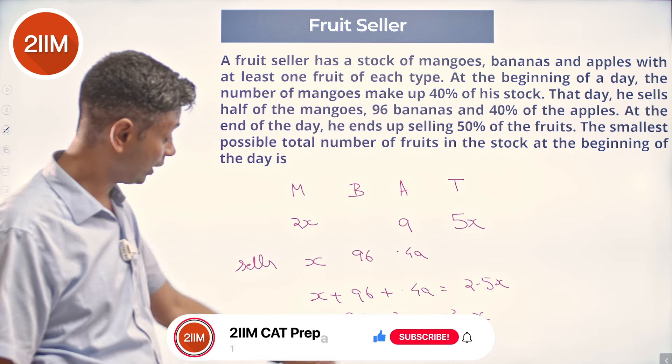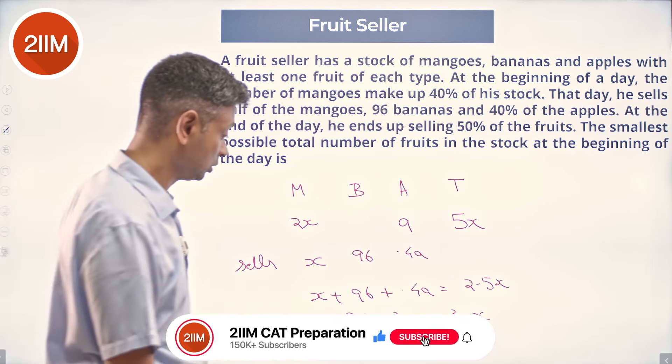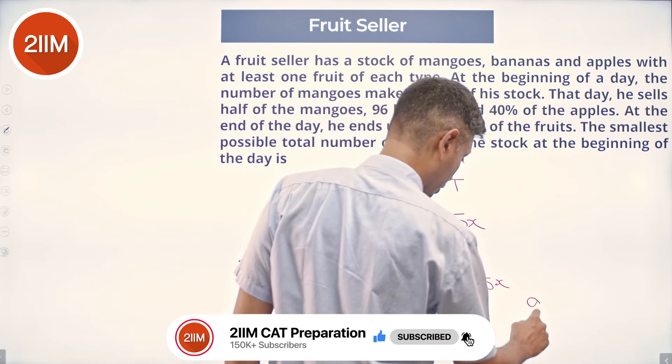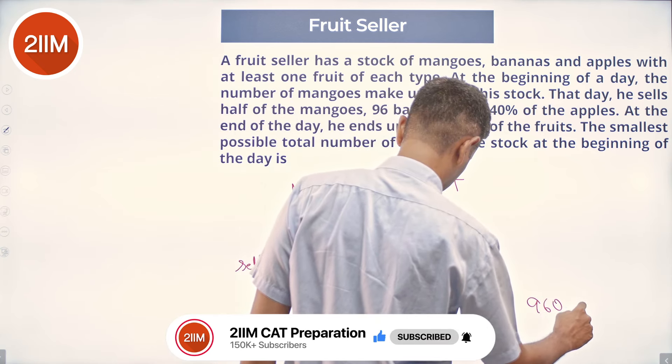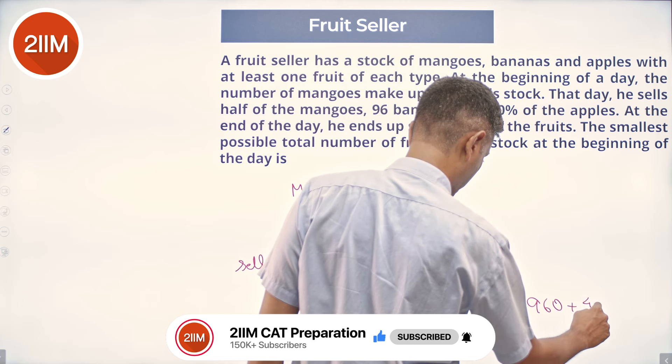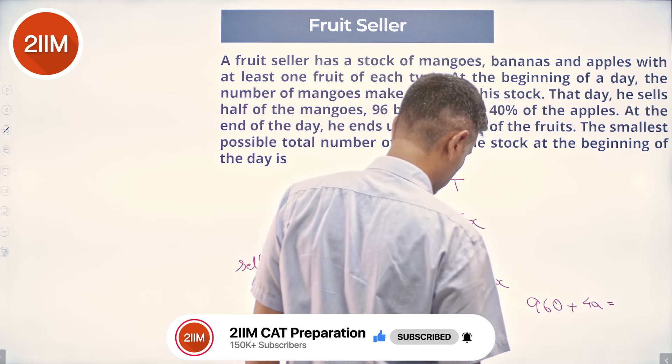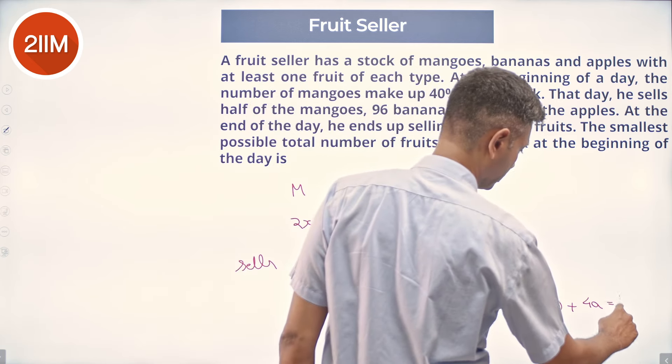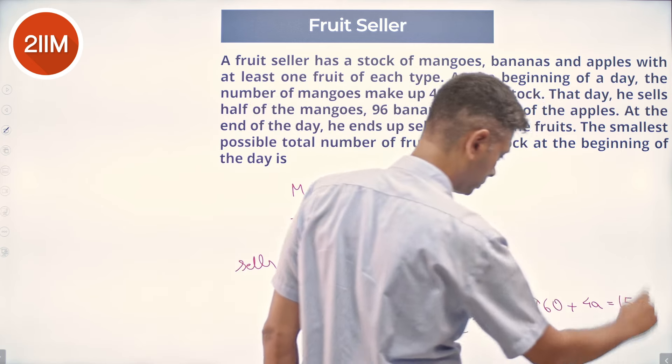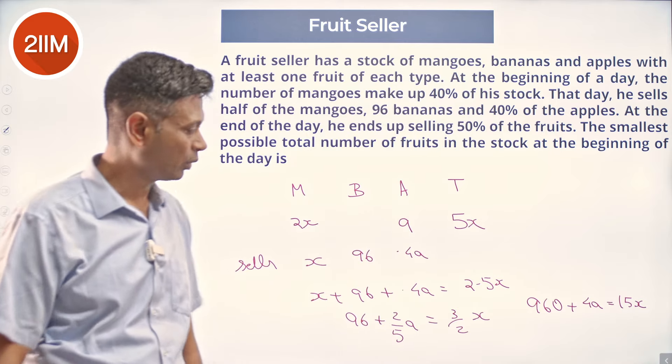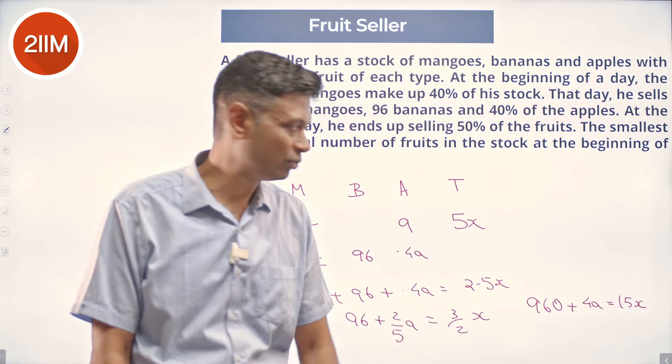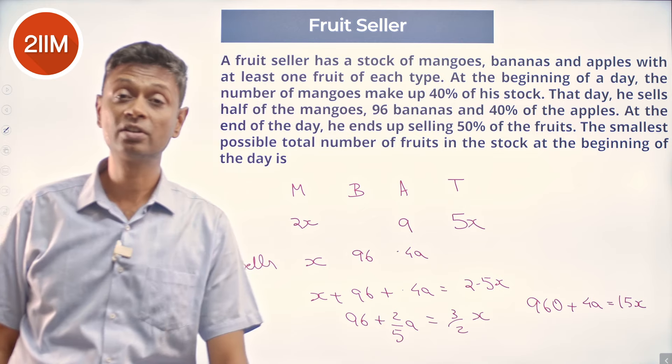I'm going to multiply by 10 throughout to eliminate the fractions, so 960 plus 4a equals 15x. Now we want to find some integer solution for this. We know a is at least 1.